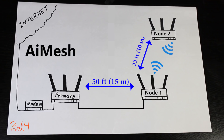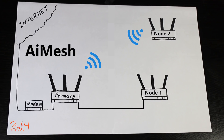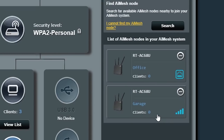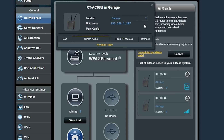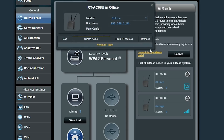As you can see in my network diagram, AI Mesh node number one is directly connected to the primary router with an Ethernet cable. Node number two, on the other hand, is connected using the wireless network. Unfortunately, I cannot tell whether it is directly connected to the primary router or through node number one, because the interface only tells me that it is connected, not how.